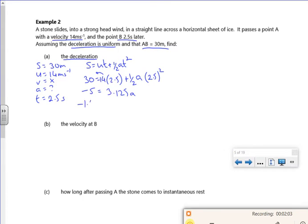So if we divide through by 3.125, I'm going to get minus 1.6, and that's good because it makes sense. This should be negative. If you've got positive there, you've got something wrong because you're saying it's speeding up, and the whole point is that the wind's slowing it down.